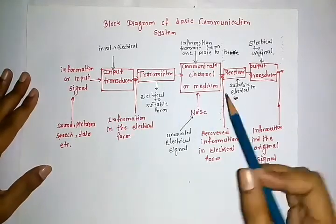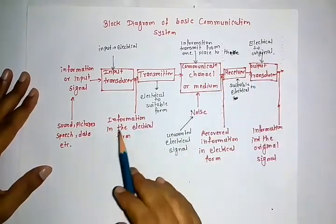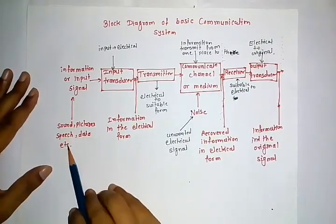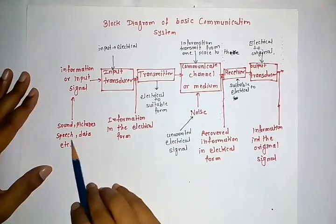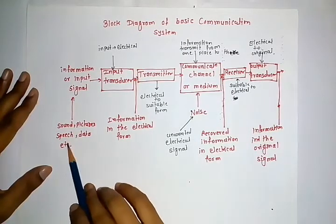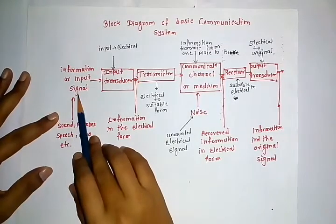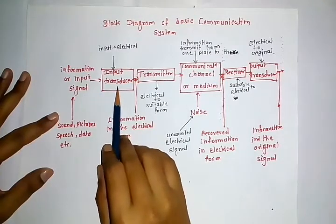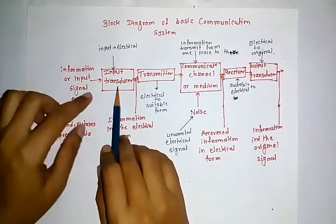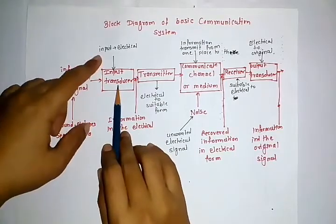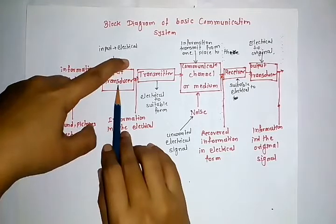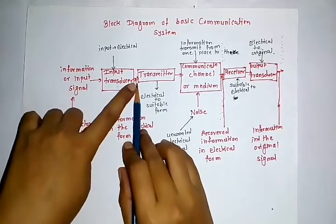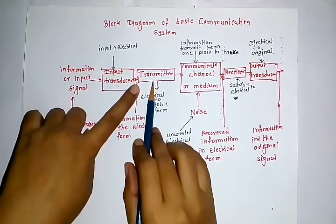In the block diagram flow: sound, picture, speech, or data is the input signal given to the input transducer. The function of the input transducer is to convert the input signal into an electrical signal. This electrical signal is then given to the transmitter.